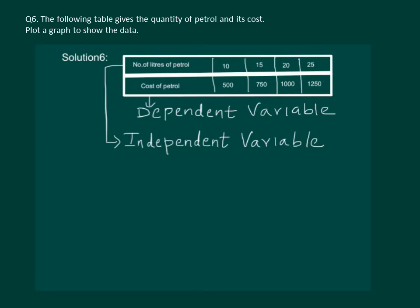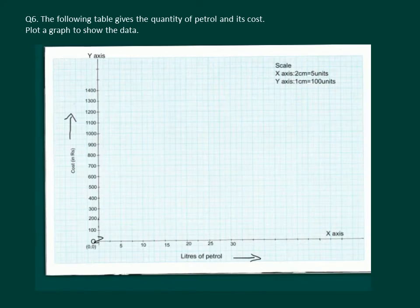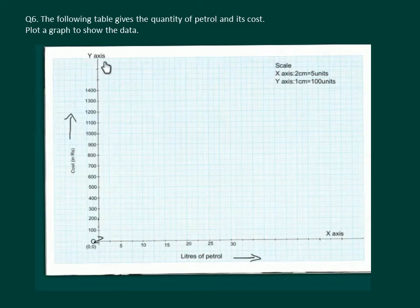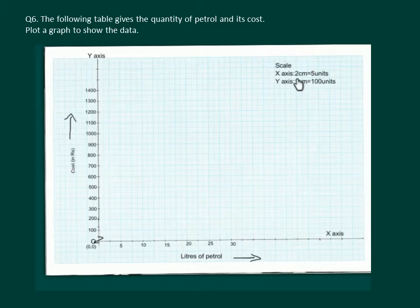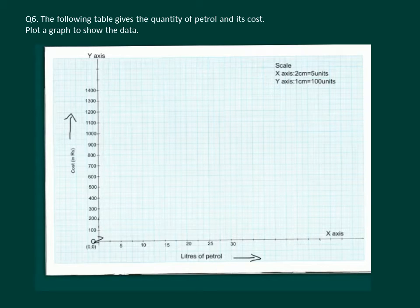Now let us proceed and draw the graph. We take a graph paper and draw the x-axis and y-axis. We make a jagged line on the y-axis as we are directly taking 100 and not plotting numbers between 0 to 100. Mark the scale as 2 cm equal to 5 units on the x-axis, and 1 cm equal to 100 units on the y-axis. We mark litres of petrol on the x-axis and cost of the petrol on the y-axis.